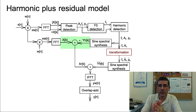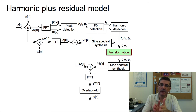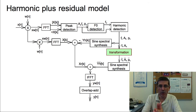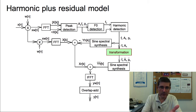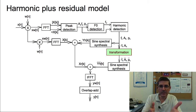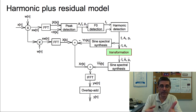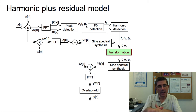The transformations are applied to the frequencies and amplitudes of the harmonics. We don't apply any transformations to the residual. In order to apply transformations to the residual, it makes sense to have a model for it, and that's what we're going to be introducing in the next model, the harmonic plus stochastic model.